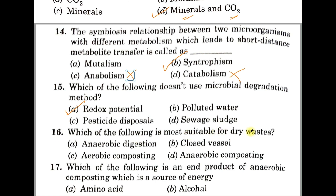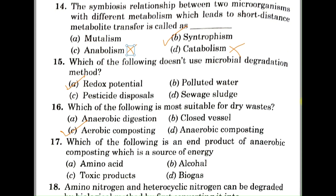Question number sixteen: which method is most suitable for dry waste? A: anaerobic digestion, B: closed vessel, C: aerobic composting, D: anaerobic composting. For dry waste, aerobic composting is suitable, while wet waste would require an anoxic process such as anaerobic digestion or anaerobic composting. The correct answer is C, aerobic composting.